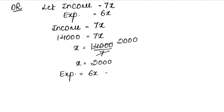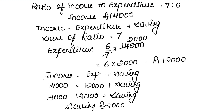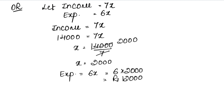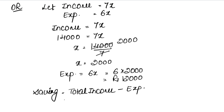Expenditure is 6x. Since income is 14,000, we solve for x. Expenditure comes out to 12,000 using the same formula. Saving equals total income minus expenses: 14,000 minus 12,000, so saving is rupees 2,000. Both patterns give the correct answer.